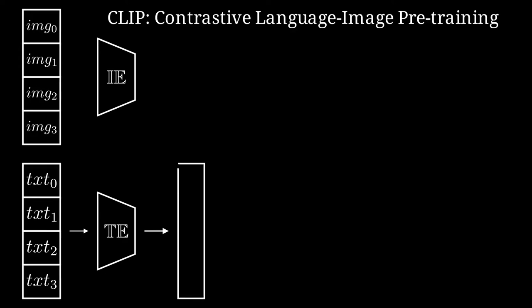Here, I am indicating with T0, T1, and so on, the encodings of the text inputs, and with I0, I1, and so on, the encodings of the image inputs.